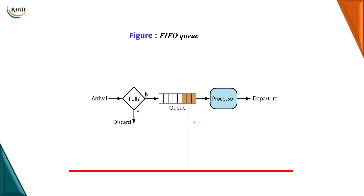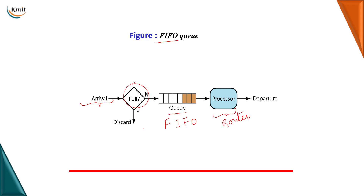So what is FIFO queue? We have an arrival of packets. If the buffer is full, we will drop the packets; if not, we will store them in a queue. Because this is FIFO — a queue is a data structure which follows first in first out. So here, whichever packet comes first will be processed first. The processor here means a router which is processing the packets, and then it will be delivered further.